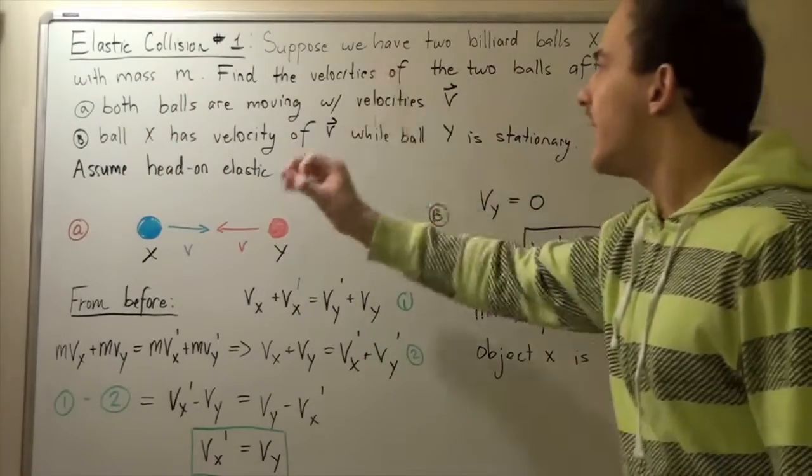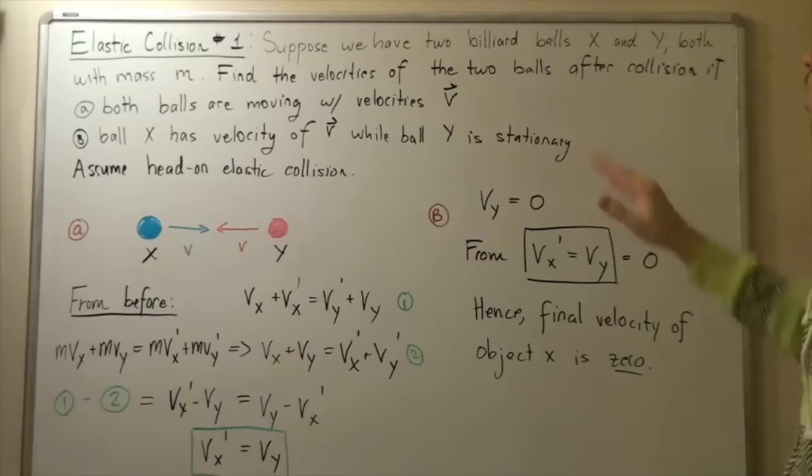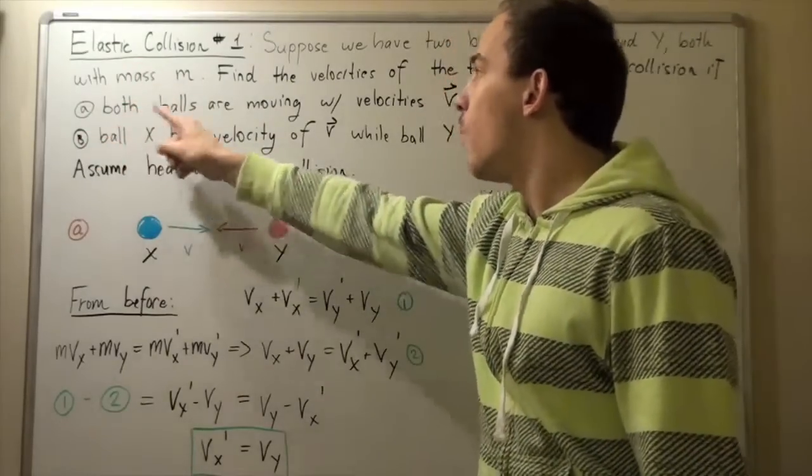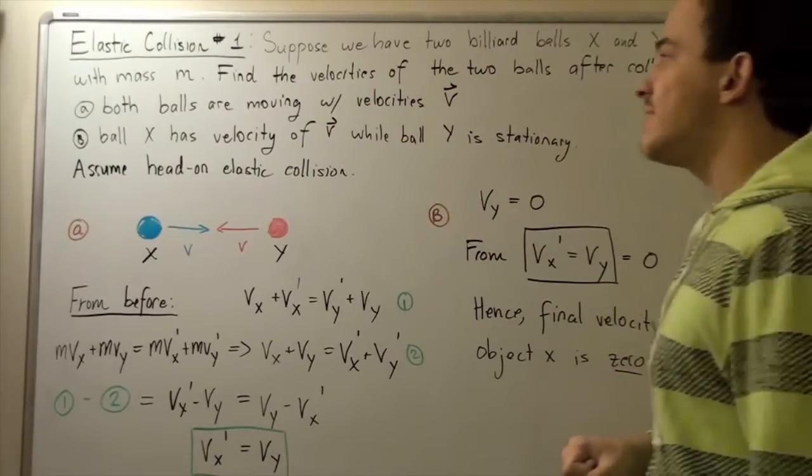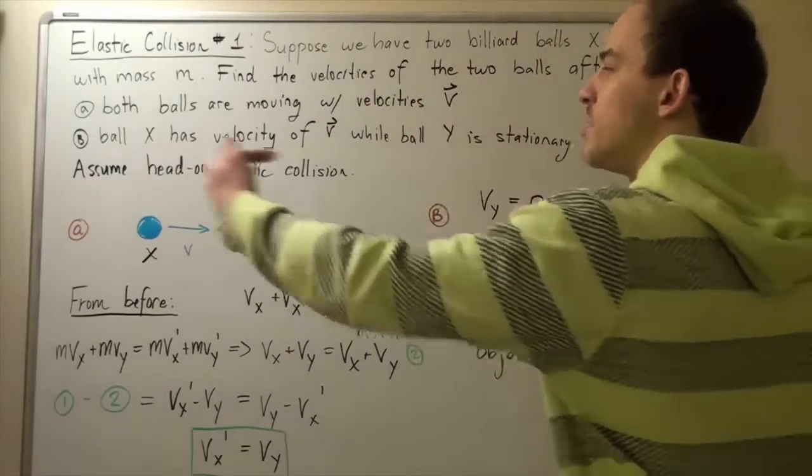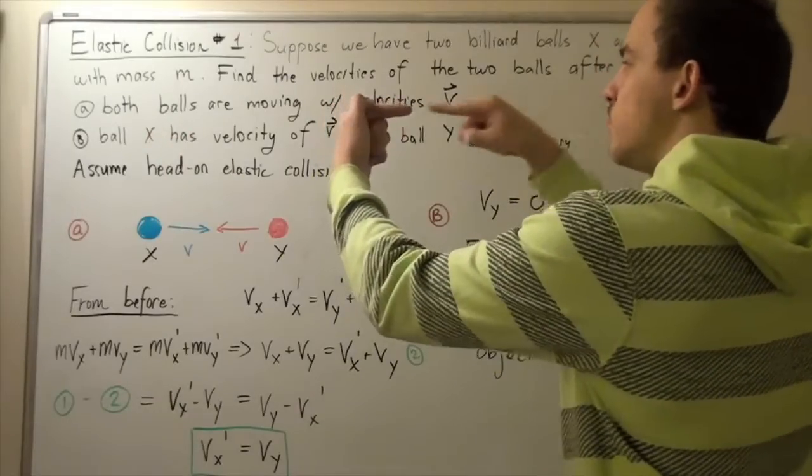We want to find the velocities of the two balls after they collide if both balls are moving with the same velocities. They have the same magnitude but different directions - one is moving this way, the other one is moving this way.